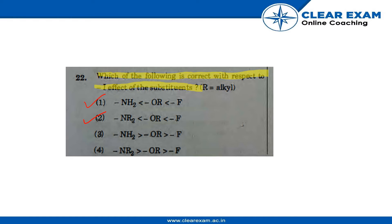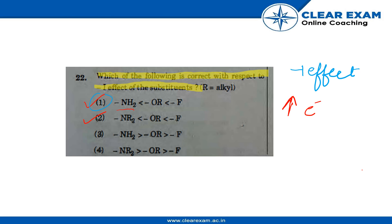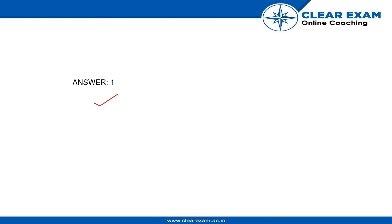This is because the minus I effect increases with increasing electronegativity of an atom. So the correct order is: -NH2 followed by -F, and our option 1 reflects this.